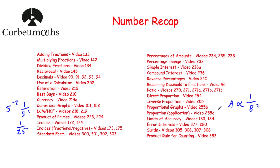Limits of accuracy: make sure you know how to find the lower bound and the upper bound, and use them in questions. Error intervals: make sure you can write error intervals for rounding and also for truncating. Surds: make sure you know the rules — √a × √b = √(ab), √a ÷ √b = √(a/b), and √a × √a = a.